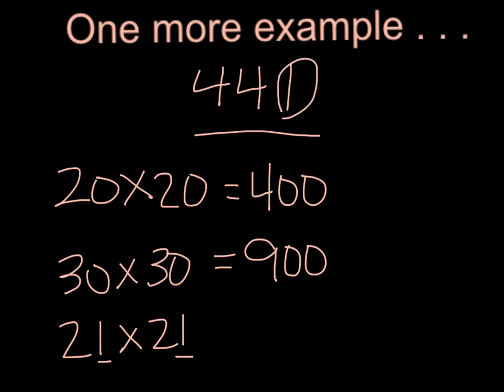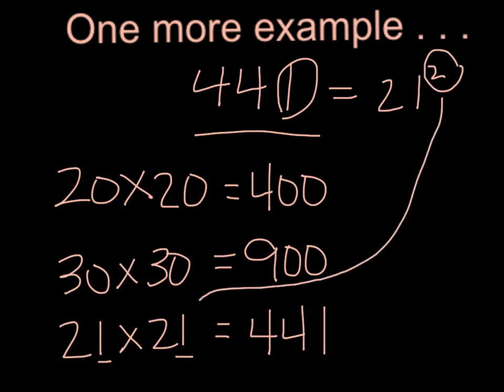21 times 21 is, in fact, 441, so the square root of 441 is 21. Notice that I used an exponent of 2 to show that I am multiplying 21 by itself 2 times.